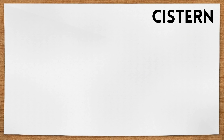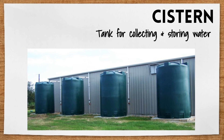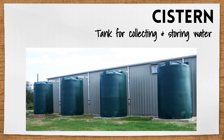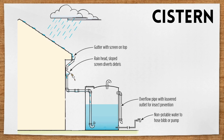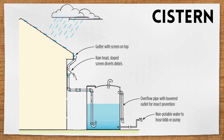A cistern is a tank for collecting and storing water. The rain falls on a surface, usually a roof, that's pitched to direct the rainwater into a gutter or pipe, sending it to the tank for storage. The collected rainwater can then be reused in irrigation or other non-potable uses like flushing toilets.